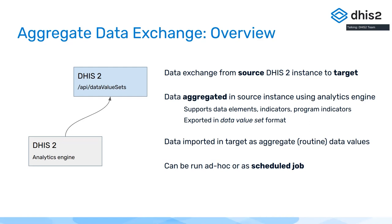The data is exported in the data value set format. Out of the source DHIS2, we get data in the raw data value sets — or what some people call the aggregate data value format of DHIS2. This is quite powerful because it allows you to do data transformation and data aggregation in the source instance. If you'd like to use an indicator to compute a number or aggregate in time or up in the hierarchy before exchanging data, we can now do that easily. The format is identical to the Analytics favorites in the API, so it should be familiar to many.